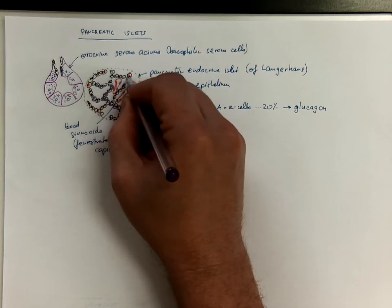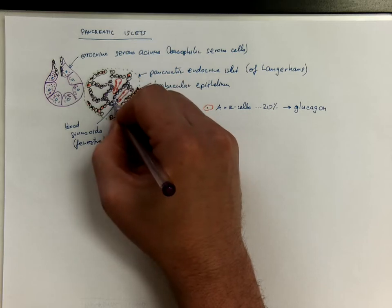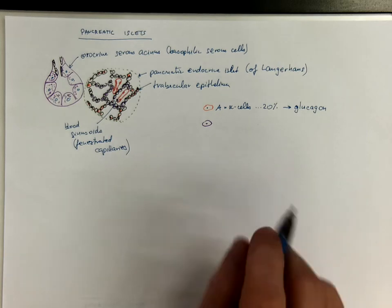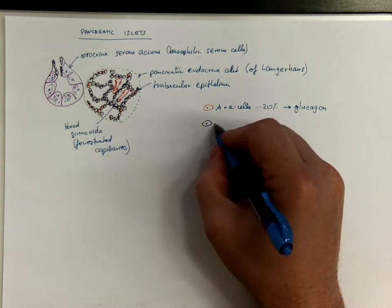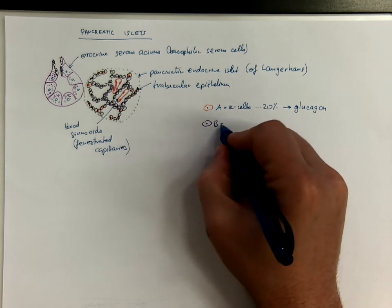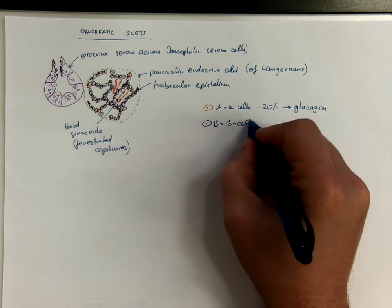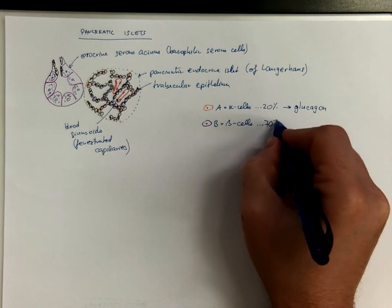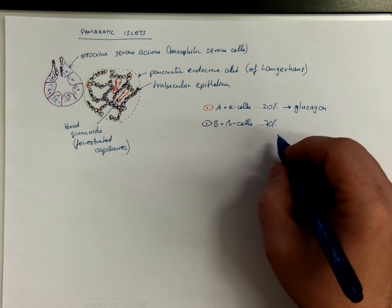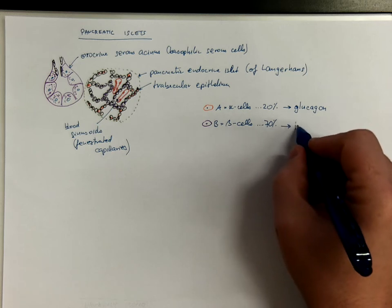These are the most numerous cells there, representing approximately 70%, B or beta cells, 70% of the whole population of the islets. And they are producing a hormone called insulin.